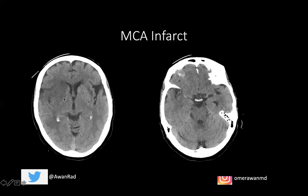An MCA infarct looks like this — along the sylvian fissure, notice there's hypoattenuation or dark area effacing the sulci and blurring the gray-white matter differentiation. The gray matter and white matter become indistinct. This is a nice example of what an MCA infarct looks like. You can also have the hyperdense MCA sign — the vessel appears bright because there's actually clot within it. The middle cerebral artery comes in, the ACA rises up, and the MCA supplies the lateral surface of the temporal lobe. The dense material here represents a clot within the MCA, which is another sign of MCA infarct.